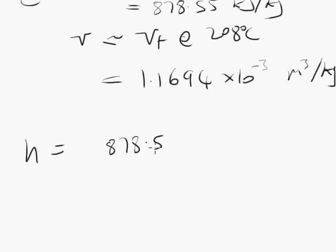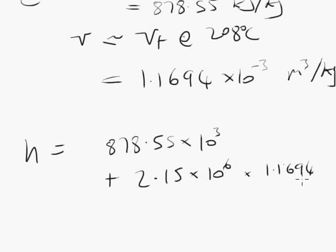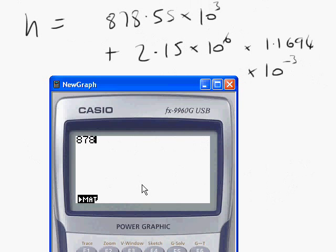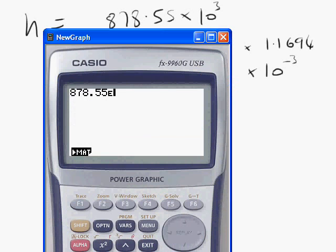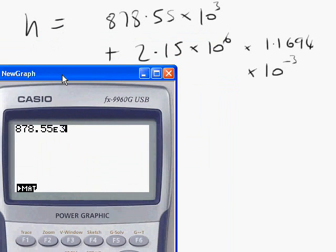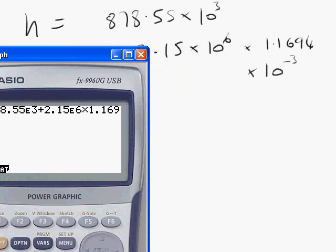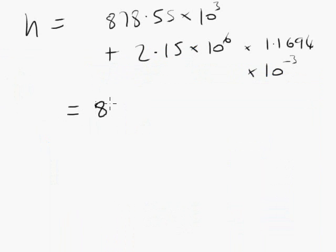Our enthalpy is 878.55, and we need to take care of the units here, plus pressure times volume. 881.06 kilojoules per kilogram.